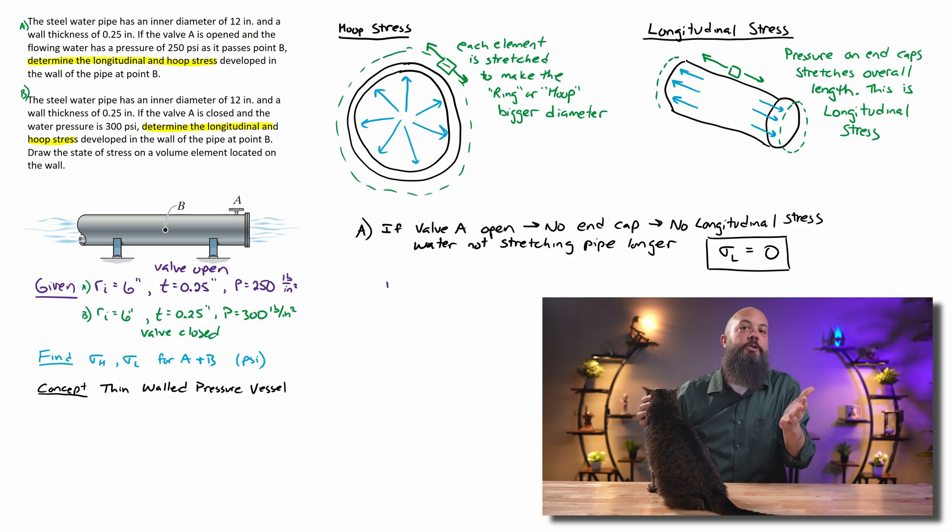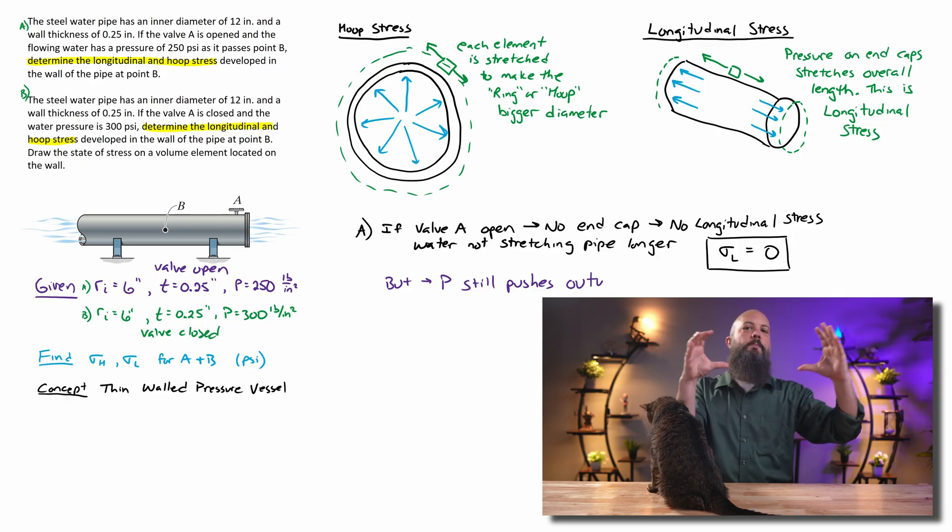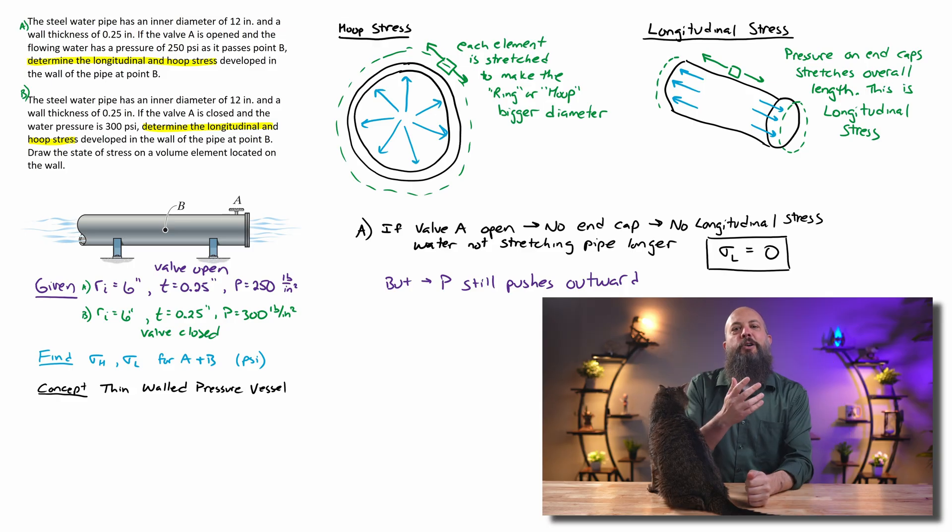So longitudinal stress is going to be zero in this case. But if the fluid is under pressure, even though it's flowing fine in one direction, it's still pushing outwards. It's still trying to make the ring bigger, still trying to make the diameter larger. And so we still have to do hoop stress.